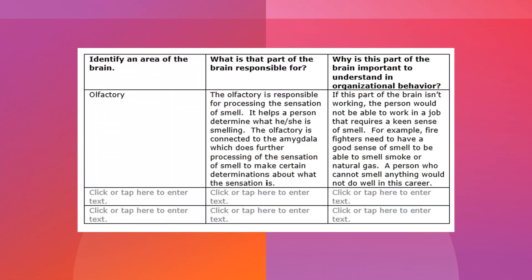Once you've done that, your table is complete. Here's an example of what it would look like having the first row completed. I intentionally chose a part of the brain not listed in your assignment so you can still use any of those listed parts for yours. Notice I have three to four sentences, I gave some information about sensation and perception, and I've discussed why it's important in organizational behavior — and notice it's specific. Make sure you are being specific and directly connecting to organizational behavior, not just to human life in general.